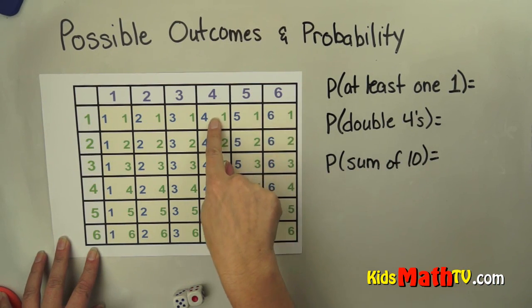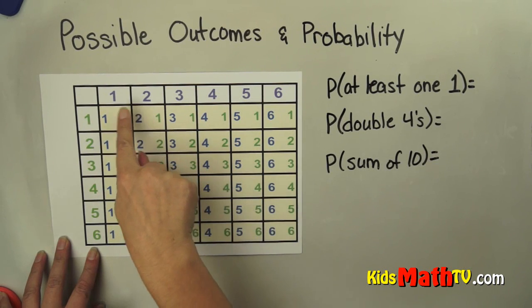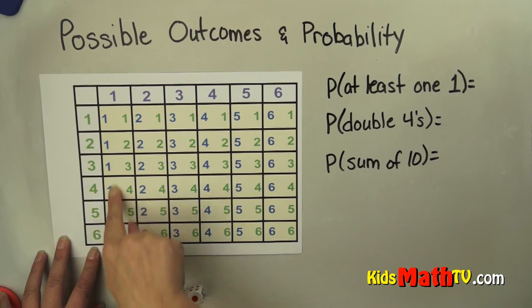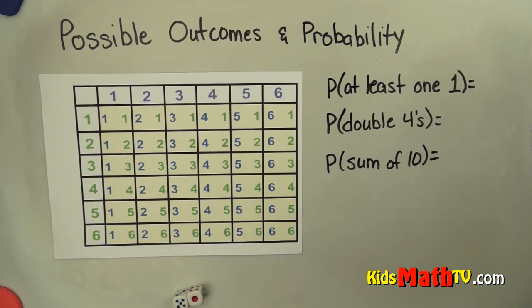There's 1, 2, 3, 4, 5, 6, 7, 8, 9, 10, 11. There are 11 outcomes that have at least one 1 in them.